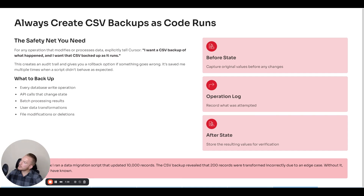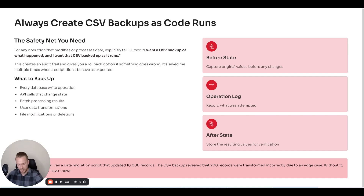I always ask for CSV backups as the code runs. If you saw my video on the SaaS classification thing — we did something the other day where we were doing that classification and my computer crashed and for some reason didn't save all the data. Ever since then, I've been asking: every time you create something, make a CSV file as a backup, so I can go back and see what work was done or pick up from where I left off. That solved the problem.